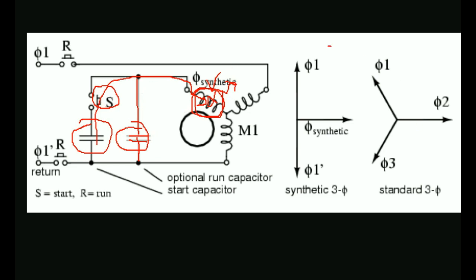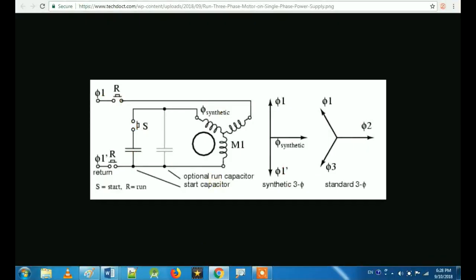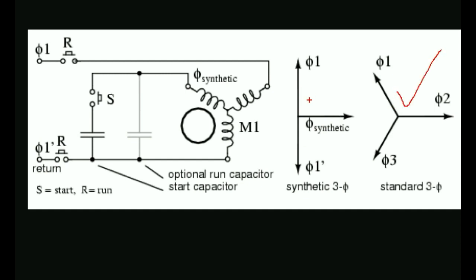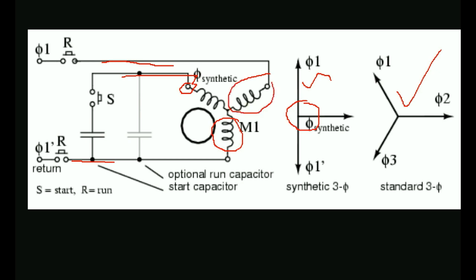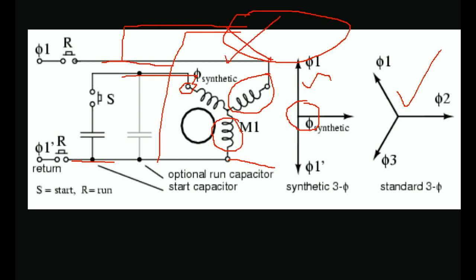This is a 3-phase motor. This is a normal 3-phase starter with 3-phase current — a conventional 3-phase current. This is a 3-phase motor. With a capacitor, we can get a load of 2 phases. We can work with a transformer — in rural areas there is a transformer.